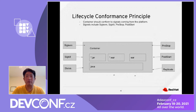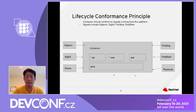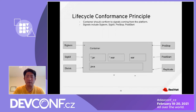Lifecycle Conformance Principle: each container should conform to signals coming from the platform. Signals trigger the lifecycle of the container — SIGTERM to terminate the container, SIGKILL to kill the container, and pre-stop and post-start hooks. These are pre and post events that happen on stop or start, and should all be respected as part of the container lifecycle. If you are not following any of these events, you are not following this principle.